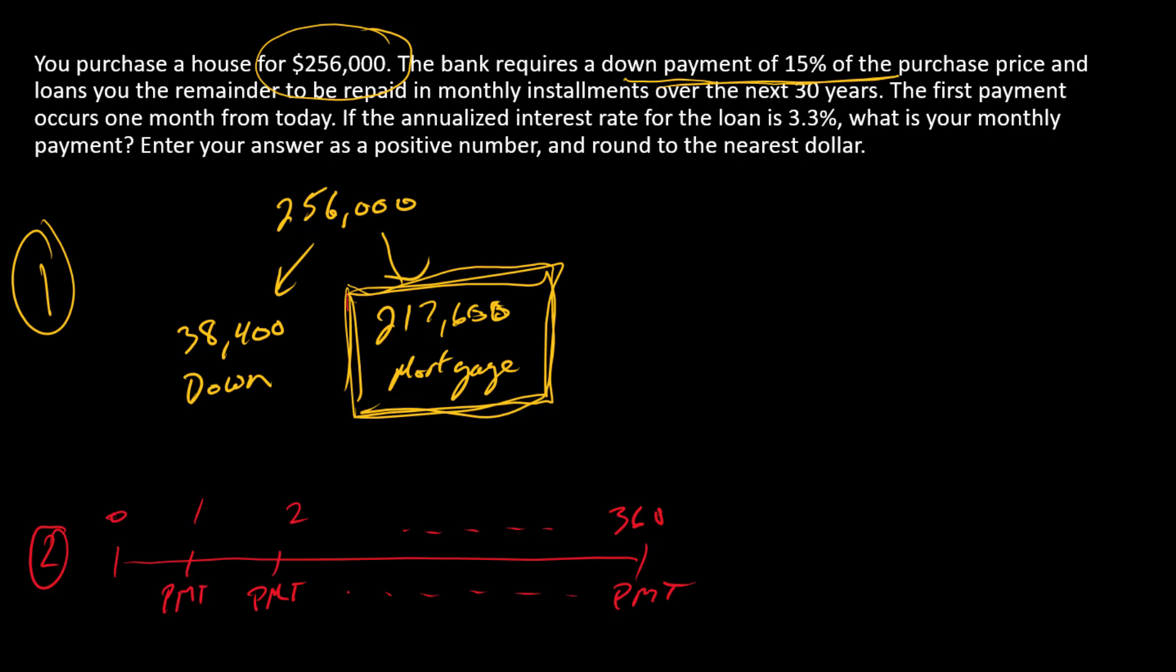Let's think about what's happening with the loan. With the loan, you are swapping the bank $217,600 to be used today to purchase the house for this series of promised payments of some amount over the next 30 years. So we can now recognize this is an annuity.